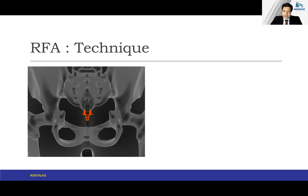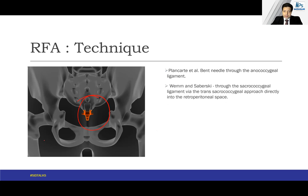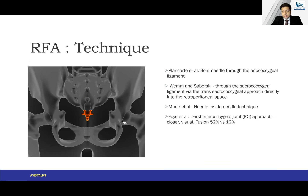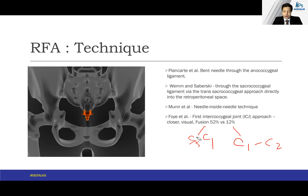For the radiofrequency ablation technique, the area of interest is highlighted. Many techniques have been proposed. Plancarte et al. used a bent needle through the anococcygeal ligament. Vem et al. used the sacrococcygeal ligament via the trans-sacrococcygeal approach directly into the retroperitoneal space — this is the most commonly used technique. Munir et al. modified this technique using a needle-inside-needle approach. Foy et al. found that there is 52% fusion at the S5–C1 sacrococcygeal junction versus 12% at the C1–C2 first intercoccygeal joint.